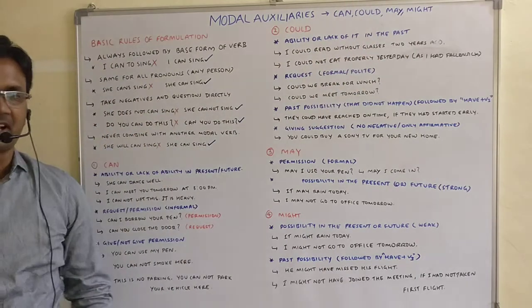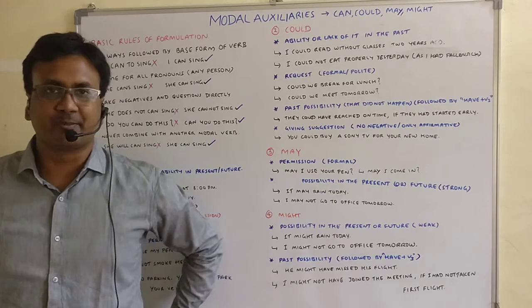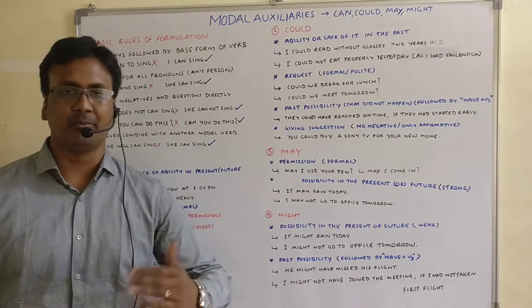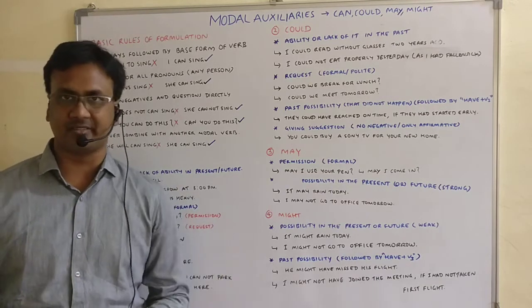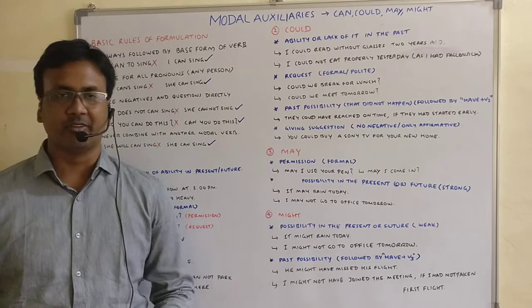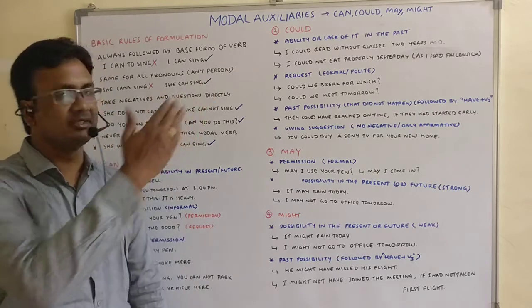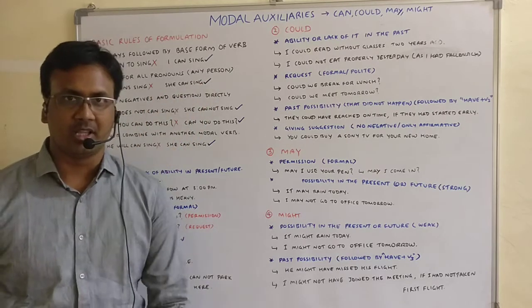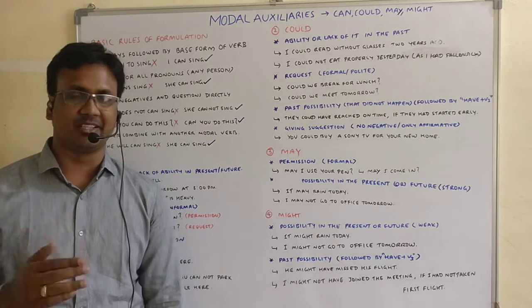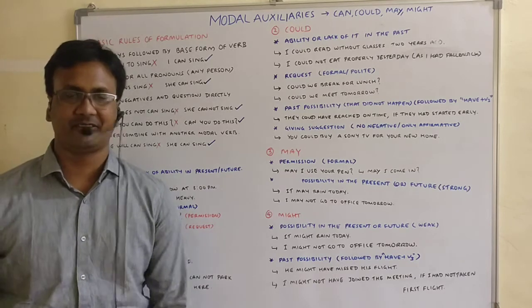So in the last class, we understood that modal auxiliaries are used to express different modalities like permissions, requests and possibilities. We will try to understand each of these four modal auxiliaries today and different use cases in real life.